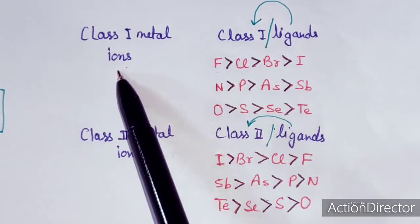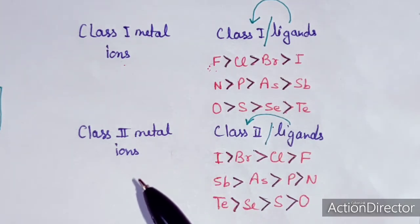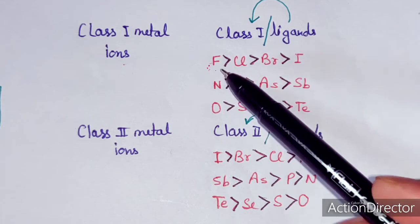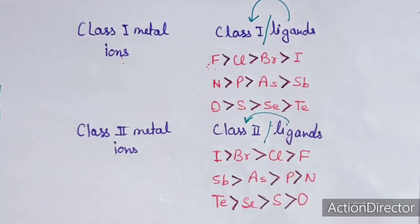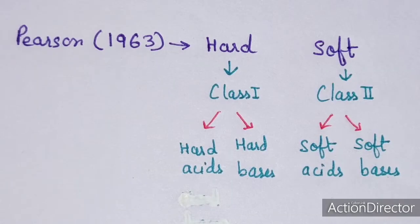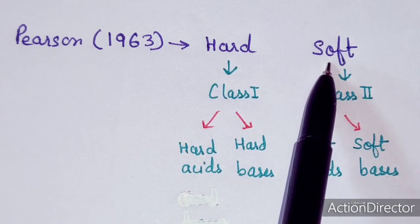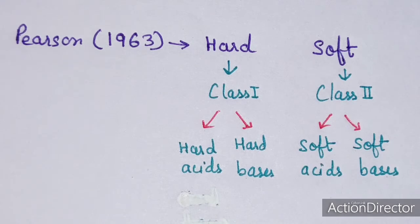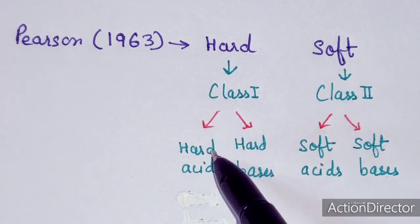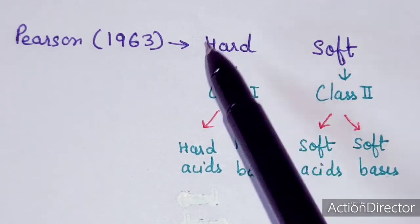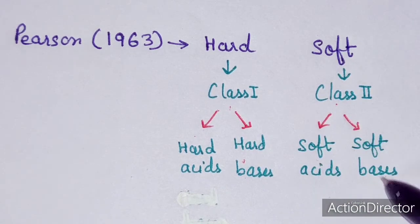The greater the tendency of the ligands to combine with the metal ion, the greater will be the stability of the complex. Based on the reactions between ligands and metal ions, Pearson in 1963 gave the names 'hard' and 'soft' to these classes. Class 1 metal ions and ligands he called hard, and Class 2 metal ions and ligands he called soft.